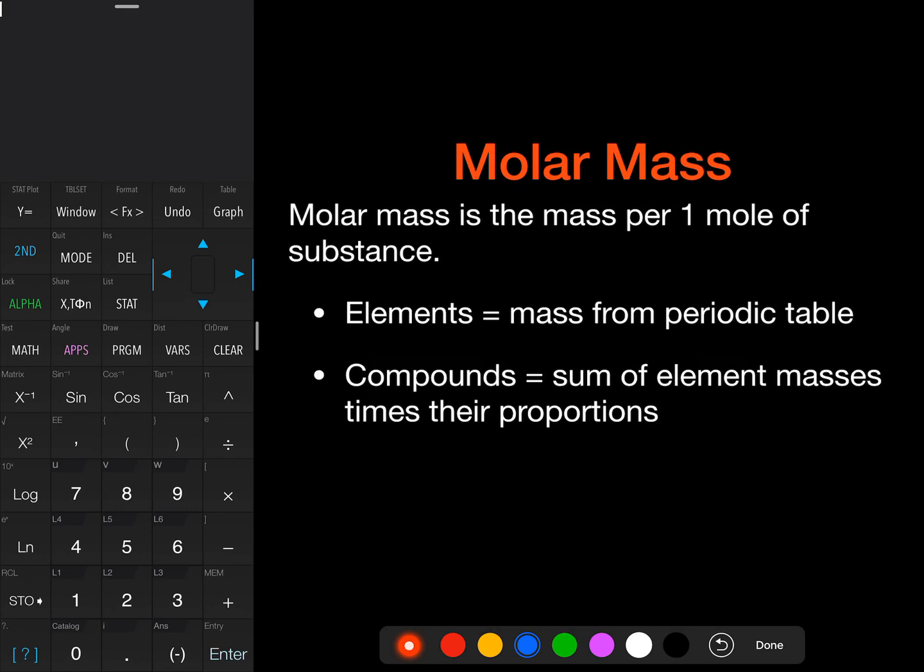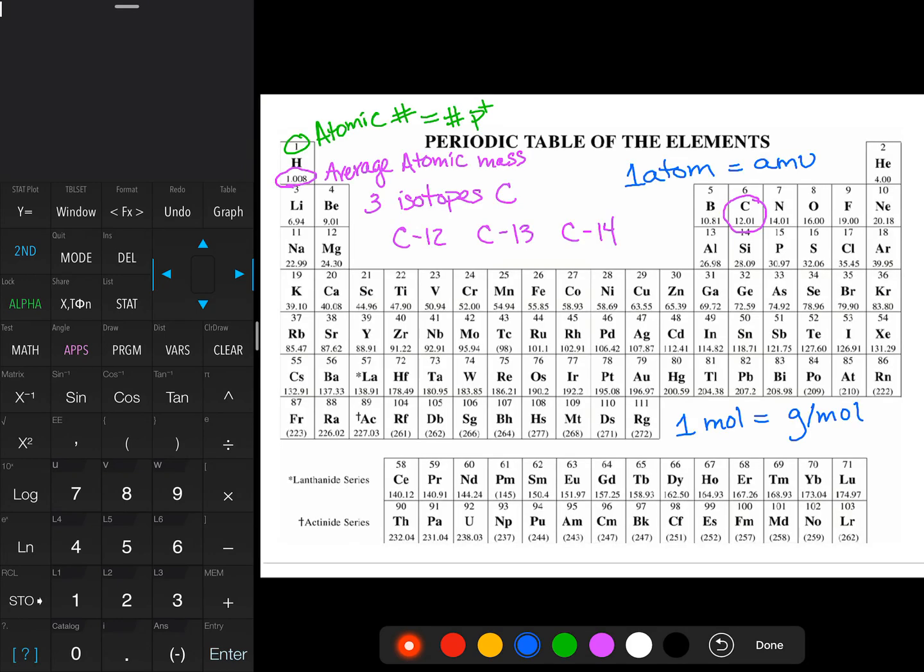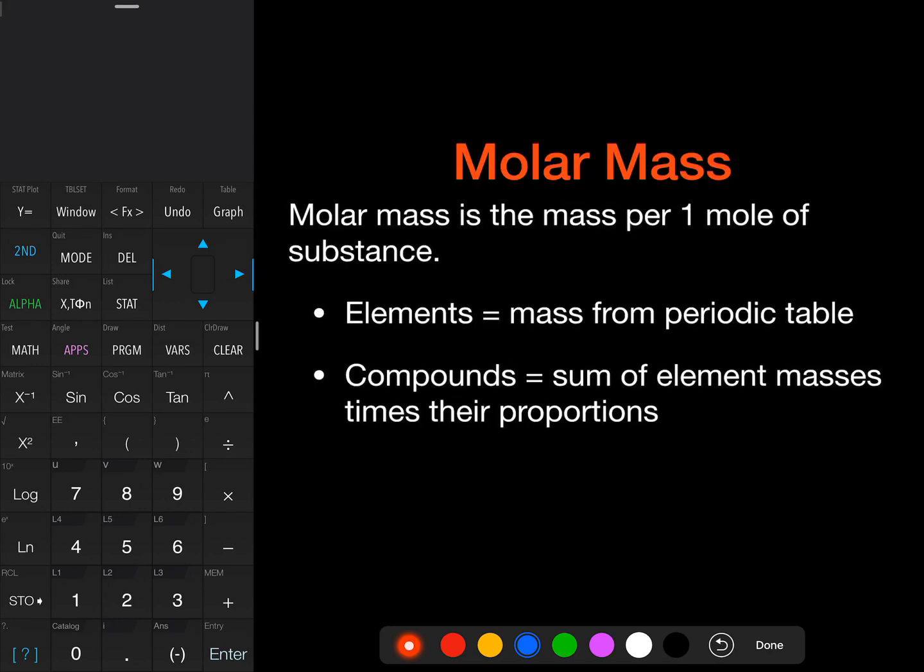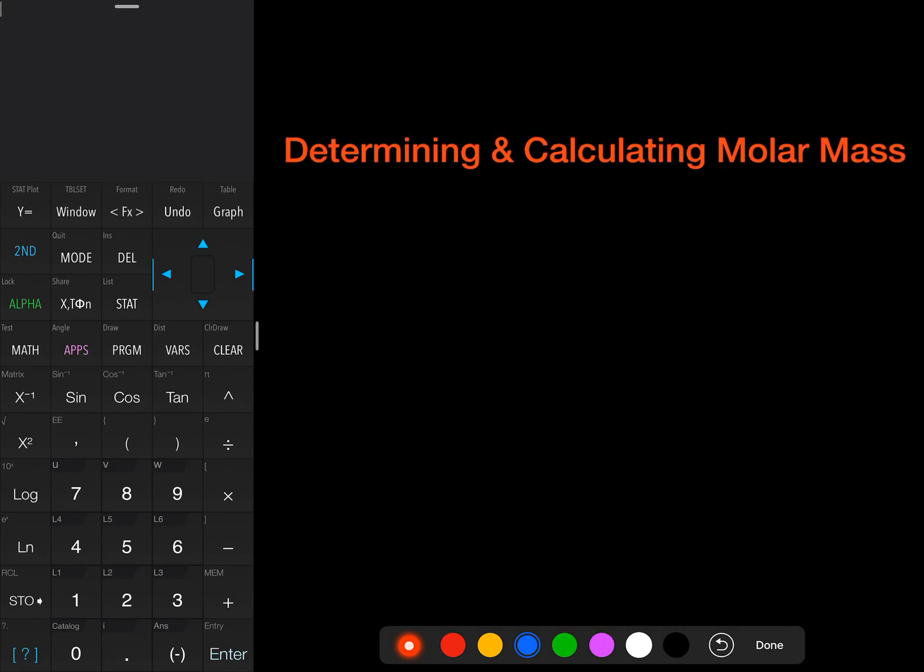So molar mass, how do we determine that? Well, it's for one mole of a substance, and the element's mass comes from the periodic table. Those are the ones that we just saw, 12.01 for carbon, 1.008 for hydrogen. Compounds are the sum of the element masses times their proportions. We need to make sure that we calculate those values. So let's go ahead and do a couple of these.